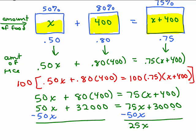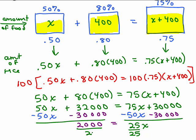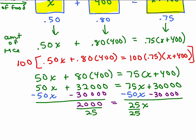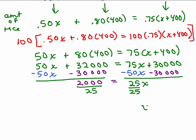We don't want 30,000 on this side, so I'm going to subtract 30,000 at the same time, and that'll give me 2,000. The last thing to do is divide both sides by 25. So 25 goes into 2,000, and that's going to be 80. So X is going to be 80.